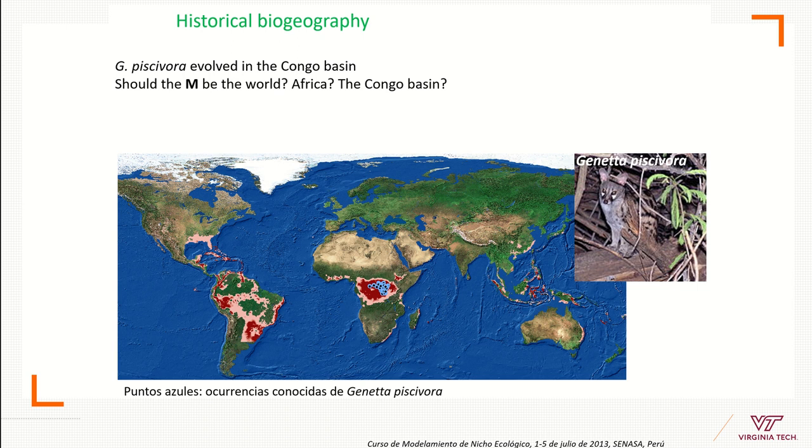For that, let's have this example. This is a carnivore from Central Africa and I need to make a model of this species. So what should be my study area here? Should it be the whole world, like a global model? Should it be all the whole continent of Africa, or maybe just the Congo Basin?